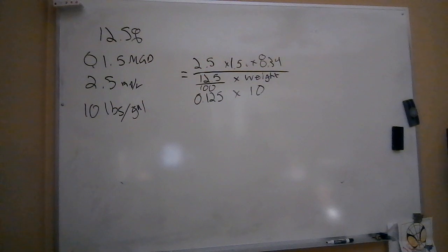2.5 times 1.5 times 8.34, and then I'm going to divide that out by the 0.125 times my 10 pounds per gallon. And that gets me to 25.02, we'll just say 25.0 gallons.